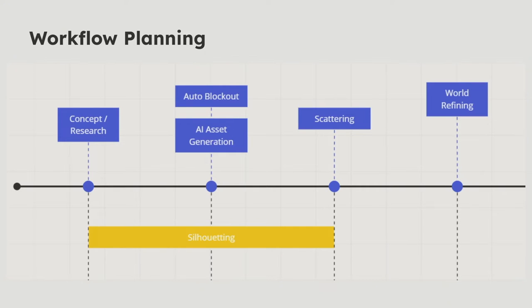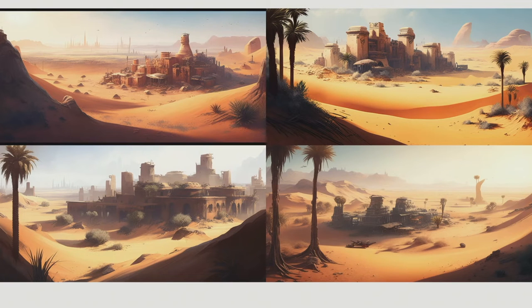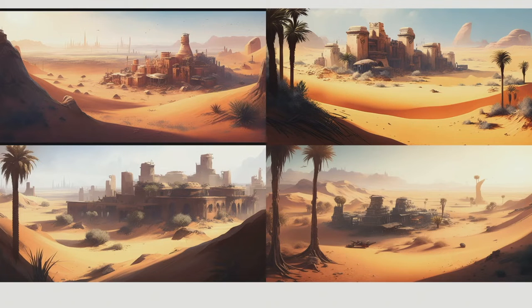The fourth step is world refining — your polish pass. How do you add life to a world you've just generated? Looking at four AI concept arts for the desert world, these were generated in five seconds in Midjourney, a Discord tool for art generation. We look at repeated assets: each one has foliage, rocks being scattered, really interesting silhouettes in the distance as edge-of-world terrain, and interesting buildings within most of them.